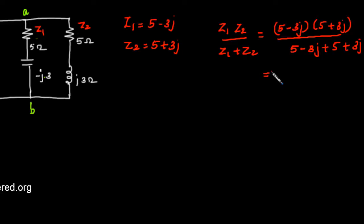So that will be 25 plus 9, that will be 34 divided by 5 plus 5, that is 10. That is 3.4 ohms.